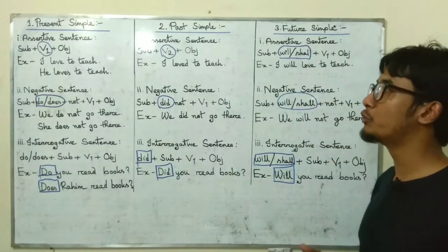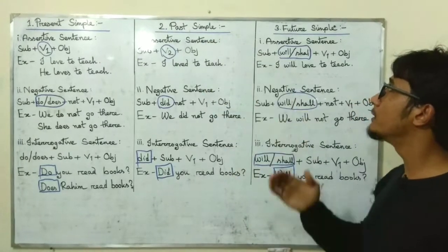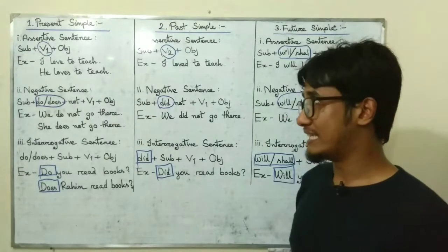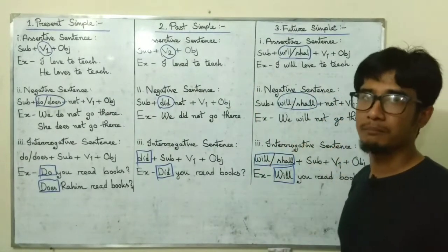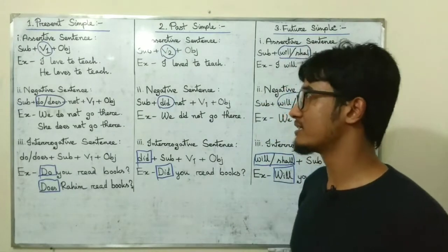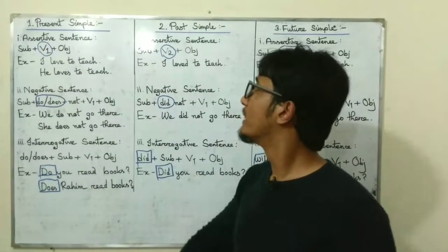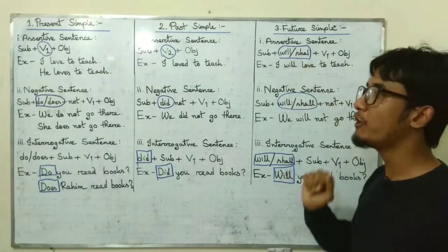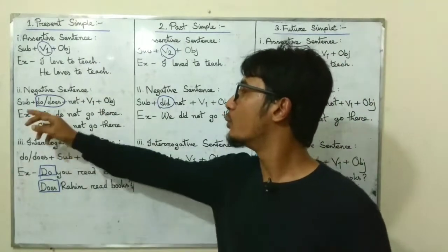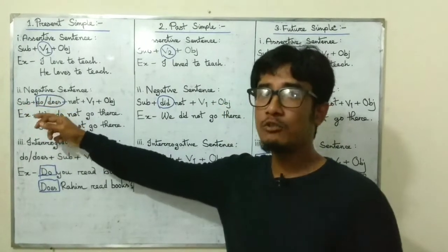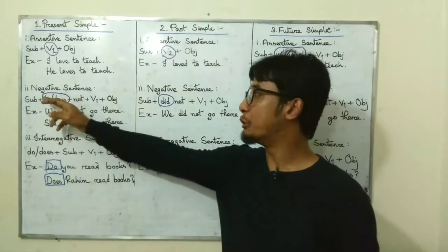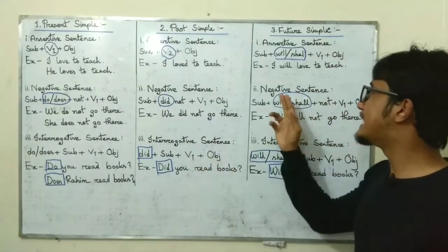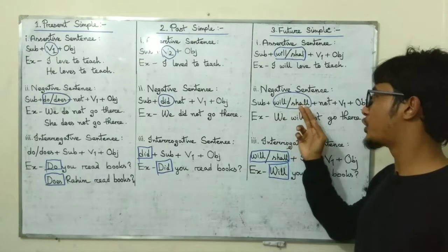So dear viewers, I have shown you how we can use present simple, past simple and future simple, which we mostly use in our daily activities — how to make assertive, negative and interrogative sentences. There are not many differences. In assertive sentences: V1 for present simple, V2 for past simple, and will or shall before V1 for future simple. In negative sentences: use do or does after the subject for present simple, did for past simple, and will or shall for future simple.